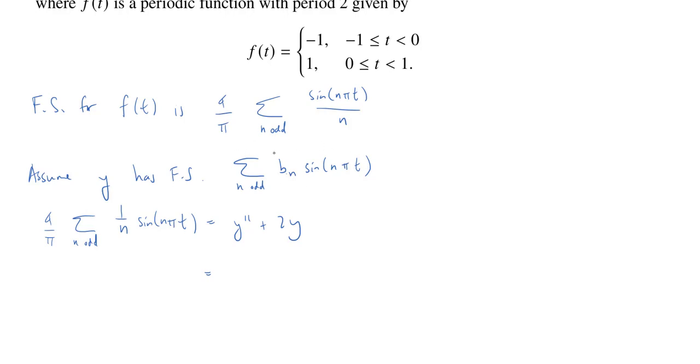So, when I take two derivatives, sine is going to turn first into cosine and then negative sine. Each time I do it, I'm going to have to use the chain rule and I'll get an extra nπ factor. So, in total, I'm going to have a sum over n odd. And I'll have negative n squared π squared times b_n times the sine of nπt.